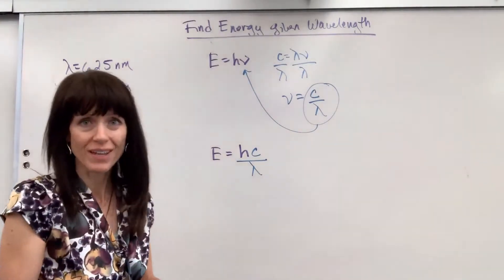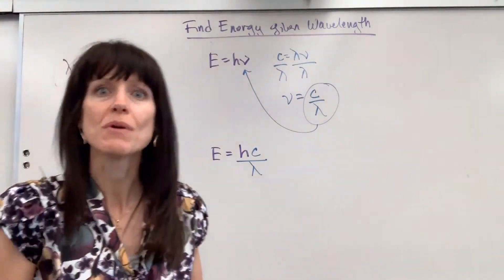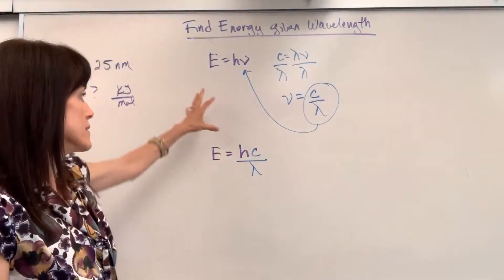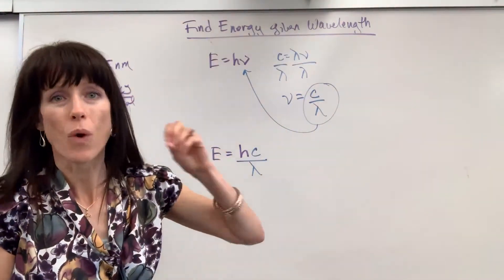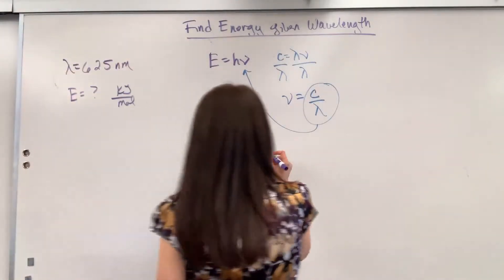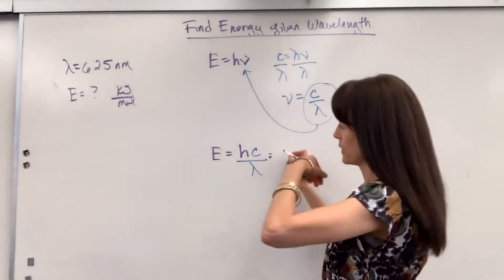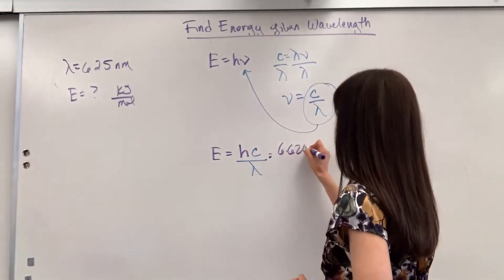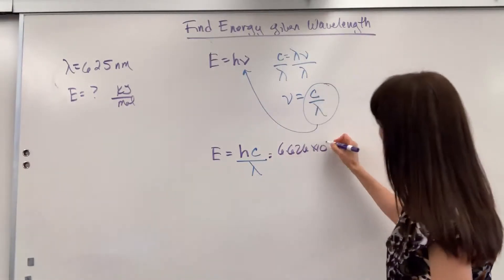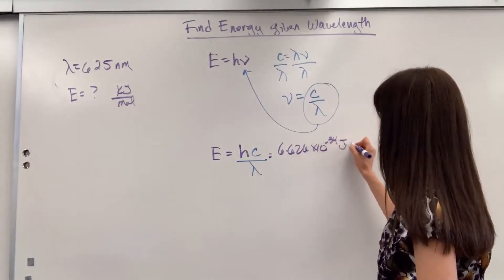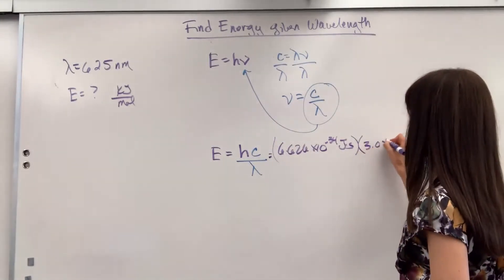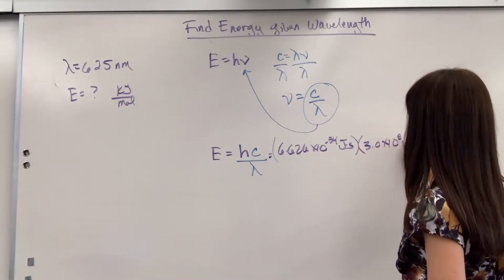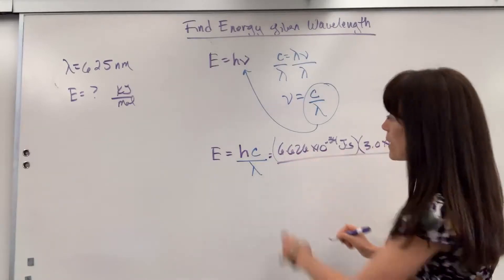If we go ahead and plug and check, it's the same math that I did just 30 seconds ago, but it's combining all in one step. So let's go ahead and plug in. We're going to have Planck's constant, 6.626 times 10 to the negative 34 joules times second, times the speed of light, 3.0 times 10 to the 8 meters, divided by wavelength.